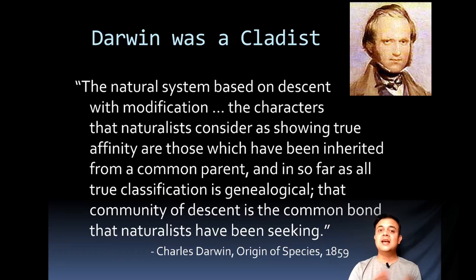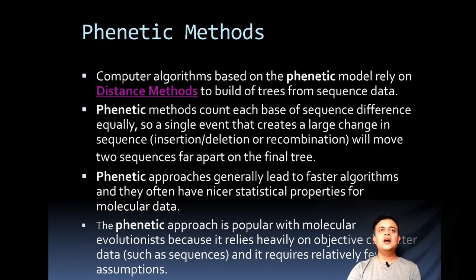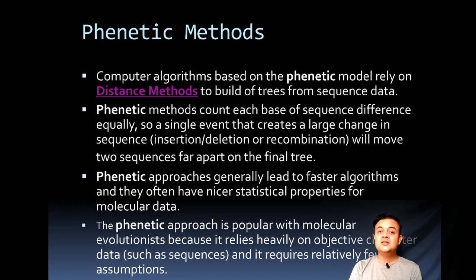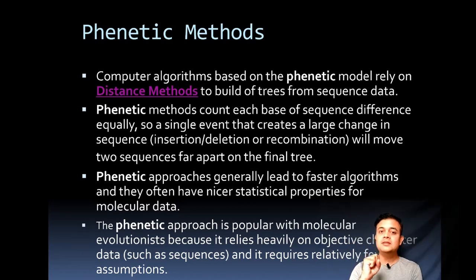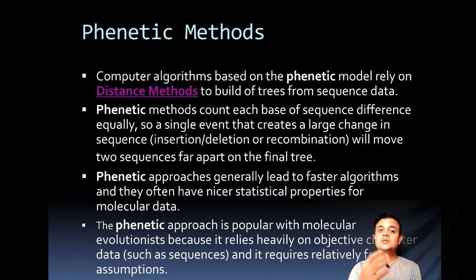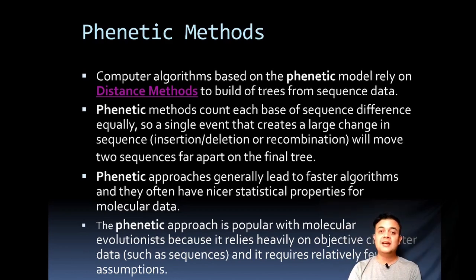Phenetic methods are computer algorithms based on phenetic models that rely on the distance method to build trees from sequence data. Both phenetics and cladistics use different kinds of algorithms. For phenetics, these are called distance methods — it starts with a distance matrix. Given DNA sequences from different taxa, you first align them into a multiple sequence alignment, then calculate the distance between any paired taxa. For 10 different plants, you calculate the distance between all pairs using permutation formulas.